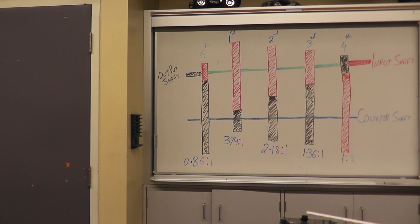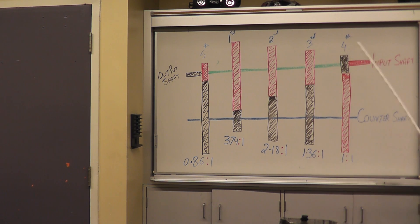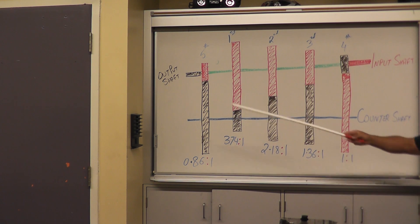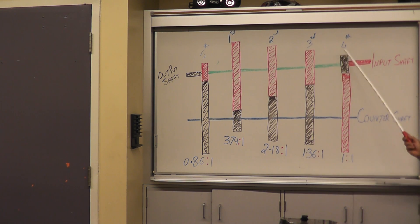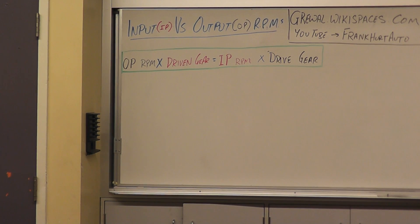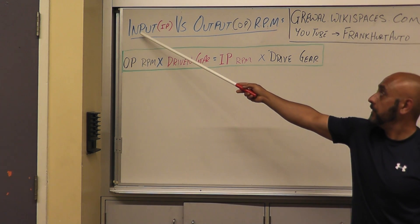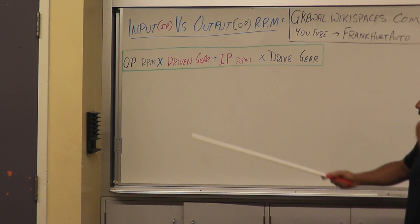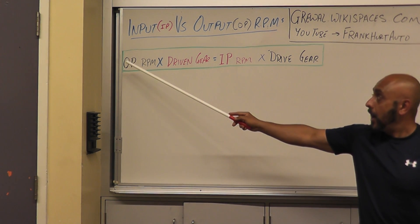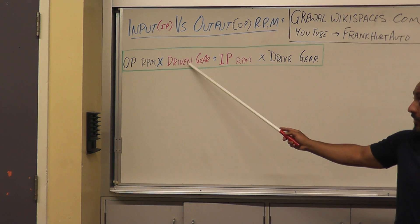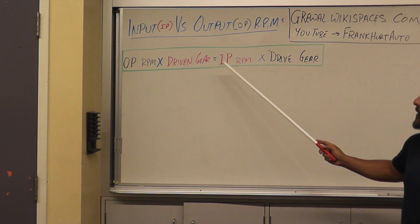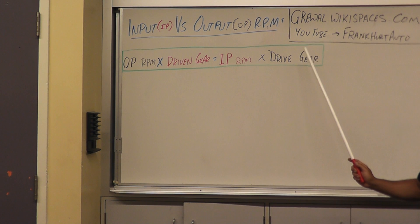Now we're going to take it a step further and find out what the input shaft versus output shaft speed ratio is in actual RPMs. If the input shaft coming from the engine is running at 1,000 RPMs, what is the output shaft running at in 1st, 2nd, 3rd, 4th, and 5th gear? The formula is: output shaft RPMs multiplied by the driven gear equals input RPMs multiplied by the drive gear.